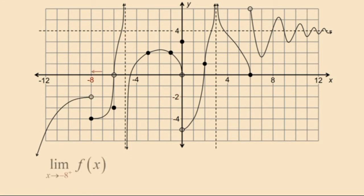Now let's take a look at the limit as x approaches negative 8 from the right of f of x. Notice that in this case as x approaches negative 8, y is approaching negative 4. Therefore the limit as x approaches negative 8 from the right of f of x is negative 4.